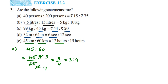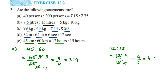The second ratio is 12 is to 15 — converting to fraction: 12 by 15. Cancelling in the 3 table: 3 fours are 12, 3 fives are 15 — giving 4 by 5, which is the ratio 4 is to 5. We can see that 3 is to 4 is not the same as 4 is to 5 — they are not equal, so the fifth statement is FALSE. The first four statements are true and the last one is false. I hope this question is clear — if you have any doubts, drop a comment. Thank you for watching.